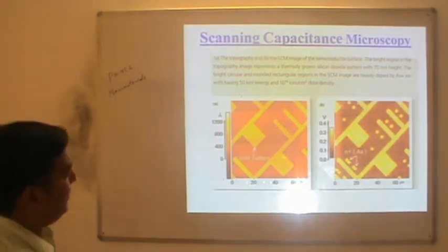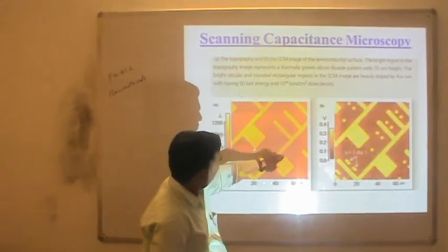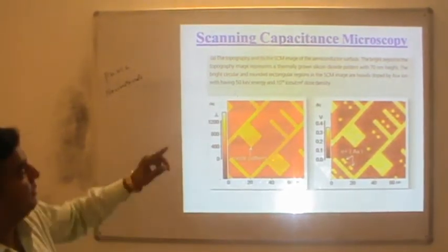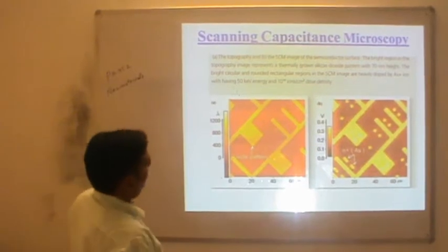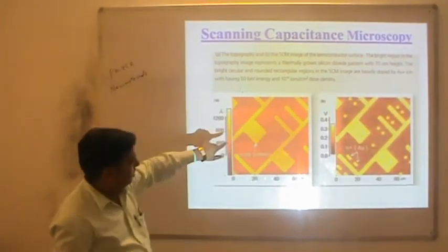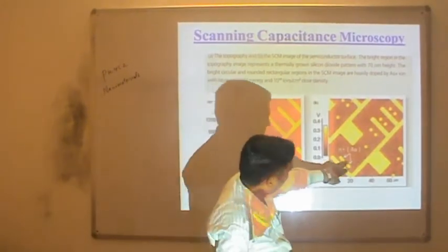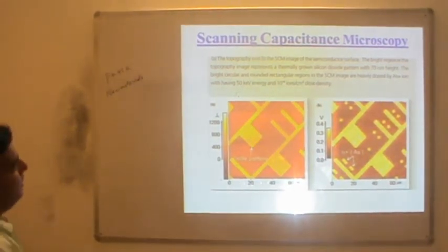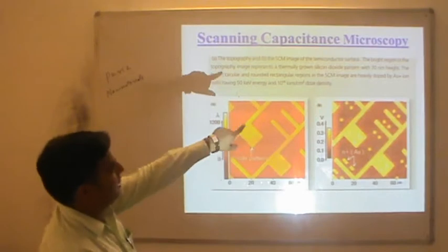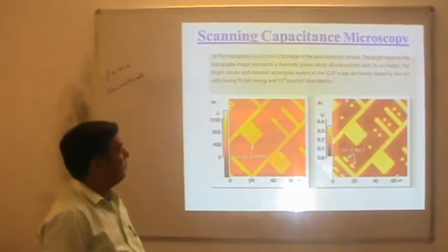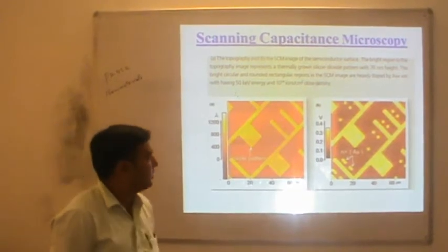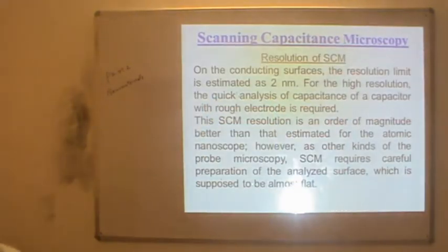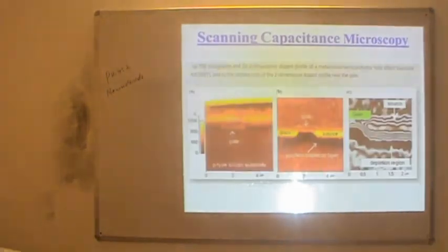These images show oxide patterns where the positions of oxides are present. The first one is the SCM image of a semiconductor surface showing dopography — the bright regions represent a thermally grown silicon dioxide pattern. The bright circular and outer circular region in the same image is heavily doped by arsenic ions with 50 kV energy and approximately 10¹⁴ charge density.